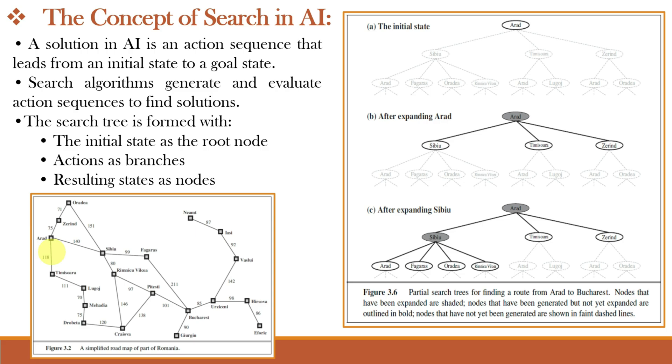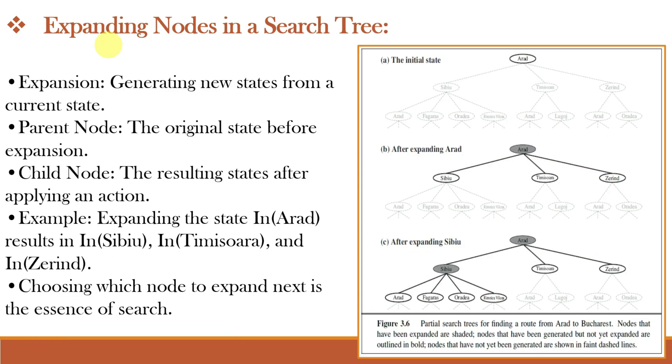From Arad, we can go to these three cities: CBU, Timisora or Zerin which are our different nodes. Expansion is the process of exploring new possibilities from the current state. We apply legal actions to generate new states. The parent node is the original state before the expansion, while the child node is the resulting states after applying an action.